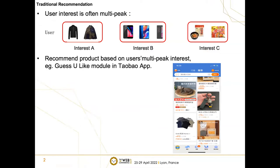User interest is often multi-peak in traditional recommender systems. Users can only receive information in a passive manner, lacking an instant feedback mechanism for interacting with the systems. So we always recommend products based on users' multi-peak interest, such as the guess-you-like module in the Taobao app.